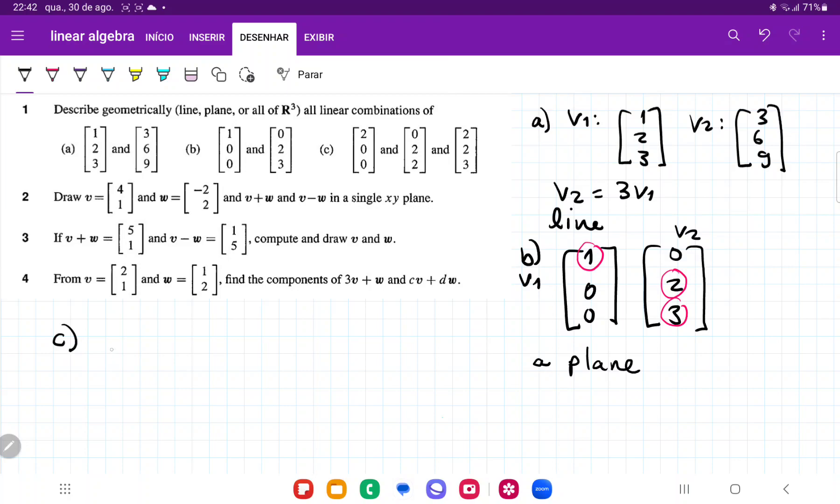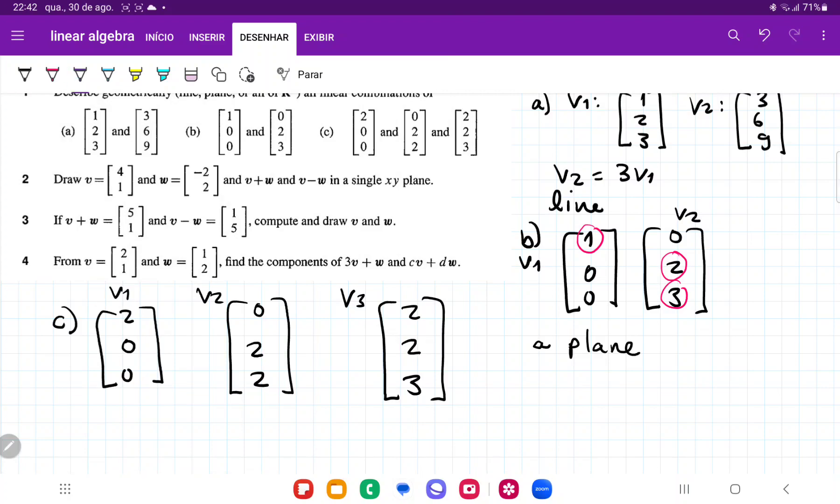And let's look at item C. So for item C, we have 2, 0, 0. That is V1. V2 is going to be 0, 2, 2. And V3 is going to be 2, 2, 3. So when we look at it, let's look at the first element. So the first element of V1 plus V2 is equal to V3. 2 plus 0 is equal to 2. The second element, 0 plus 2 is equal to 2. So it does look like it's linearly dependent. However, look at the third element. You have 0, 2, and then 3. So the math doesn't add up.